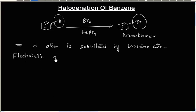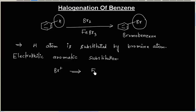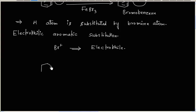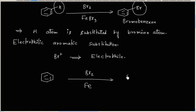In electrophilic aromatic substitution, Br⁺ is the electrophile. This reaction can also be done in the presence of bromine and iron, and the product will still be bromobenzene.